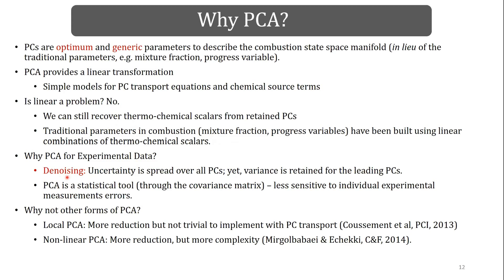When extended to experimental data, PCA has additional useful features. For denoising, uncertainty is spread over all PCs, but the information is retained in the leading PCs. If you retain the two leading PCs out of eight, you may remove about 80% of experimental uncertainty as well. PCA is a statistical tool — you're basing it on a covariance matrix over the bulk of data, making it less sensitive to individual experimental measurements. If you want to do principal component transport, you'd like the same principal components across the entire domain.